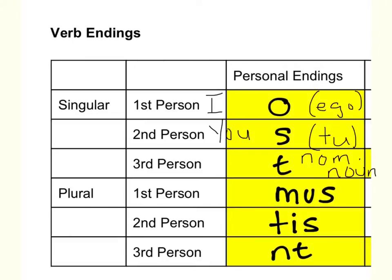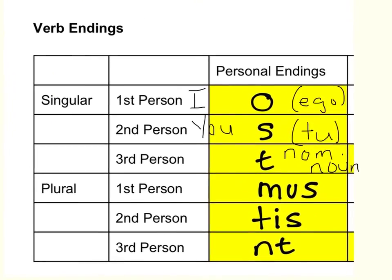Mus is first person plural. In English, that's understood as we. More than one I is a we. And the Latin word for we is nos.